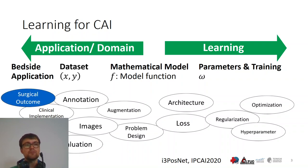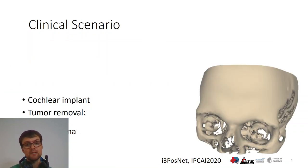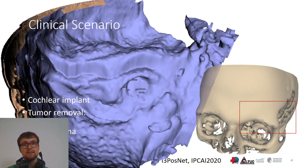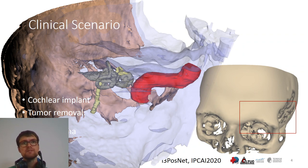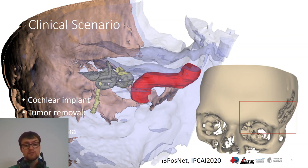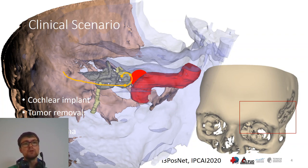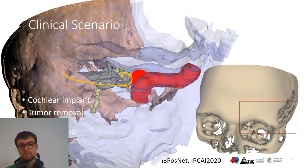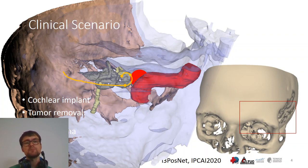Now I want to focus on the surgical application. The clinical scenario is temporal bone surgery. The temporal bone is part of the skull, and it houses the cochlea and the sense of equilibrium in the center. Typical applications are cochlear implantation and tumor removal — for example, vestibular schwannoma. These applications require extremely high precision in the intervention.